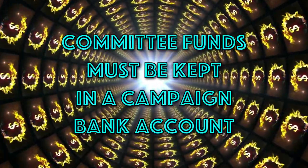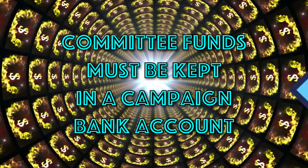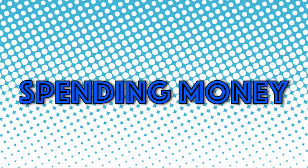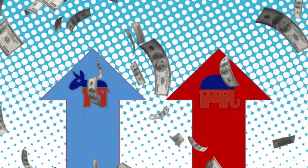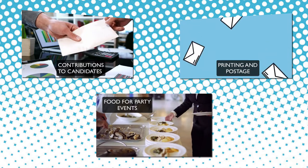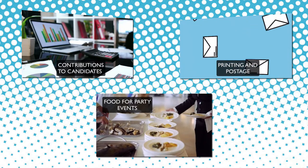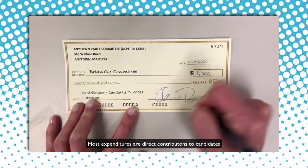Committee funds must be kept in a campaign bank account. Parties typically spend money on such things as contributions to candidates, printing and postage, and food for party events. Most expenditures by parties are direct contributions to candidates.